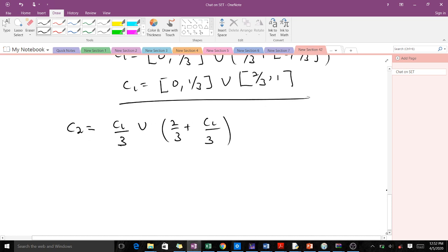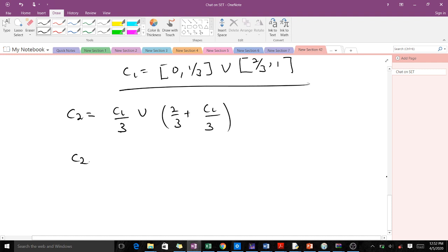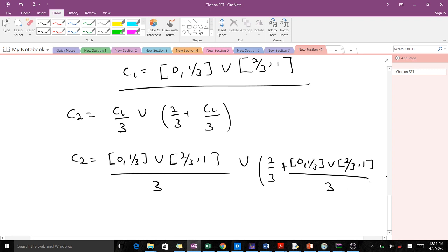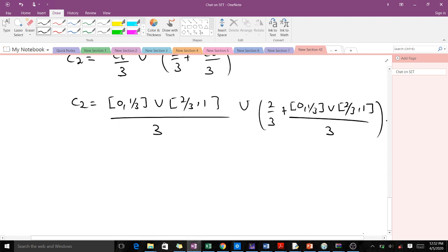This becomes a bit complex but it's not that difficult. C_1 is [0, 1/3] ∪ [2/3, 1], all divided by 3, then union 2/3 plus ([0, 1/3] ∪ [2/3, 1]) all over 3.